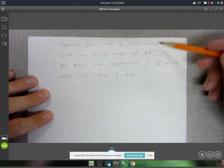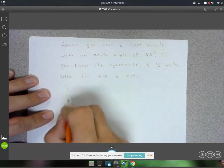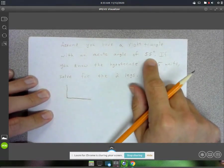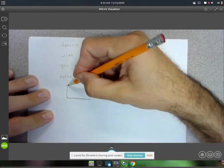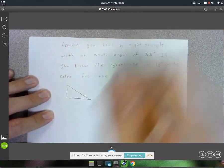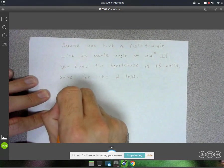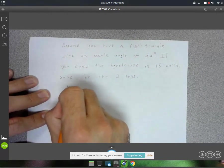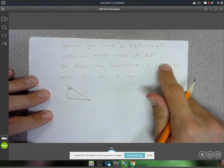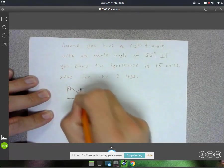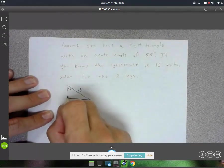So assume you have a right triangle with an acute angle of 55 degrees. I'll call this one our 55 degrees. If you know the hypotenuse is 15 units long, solve for the other two legs.